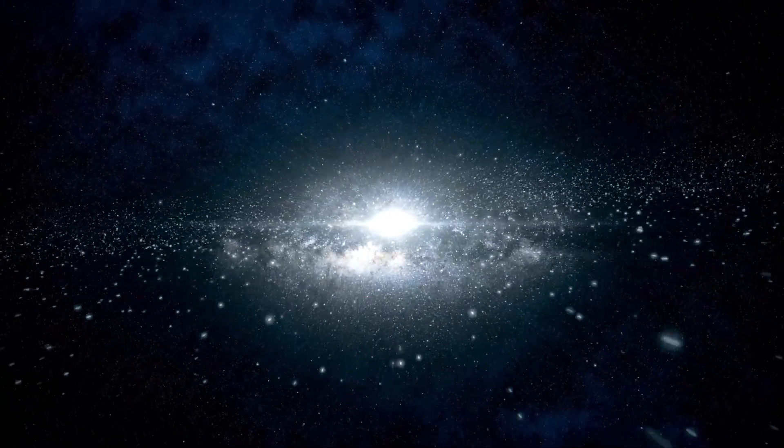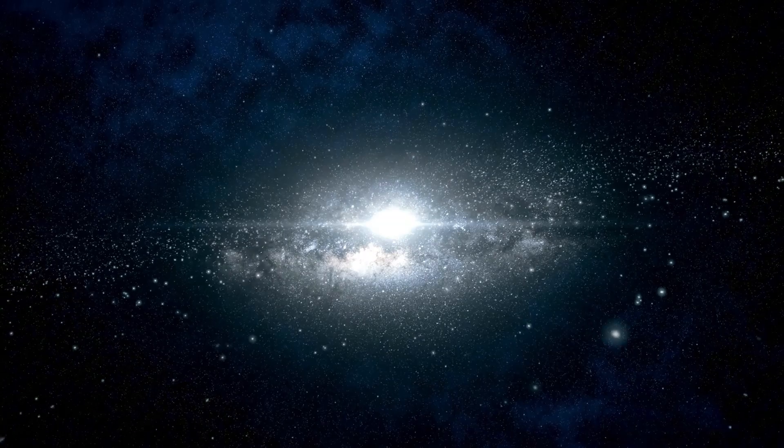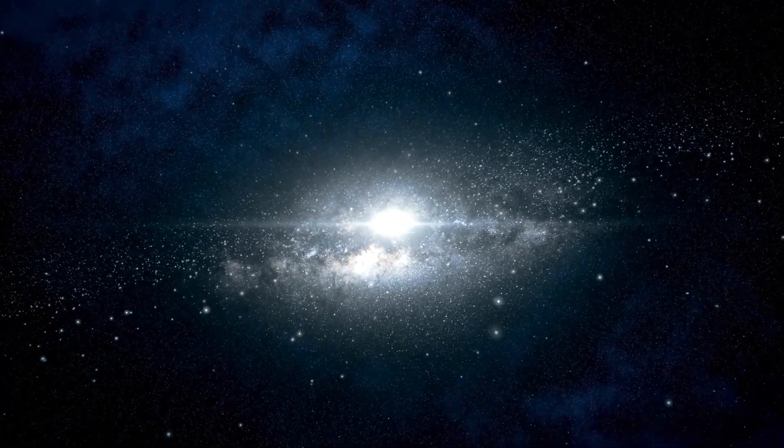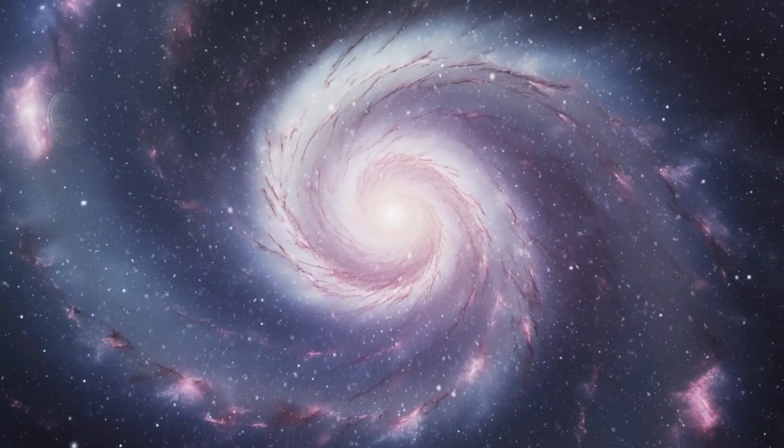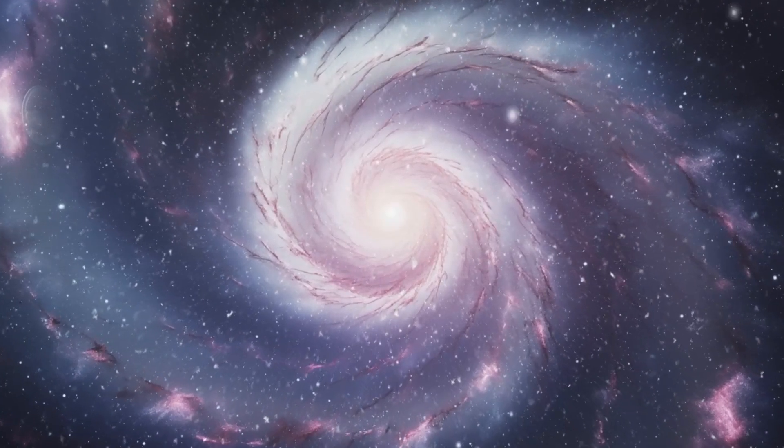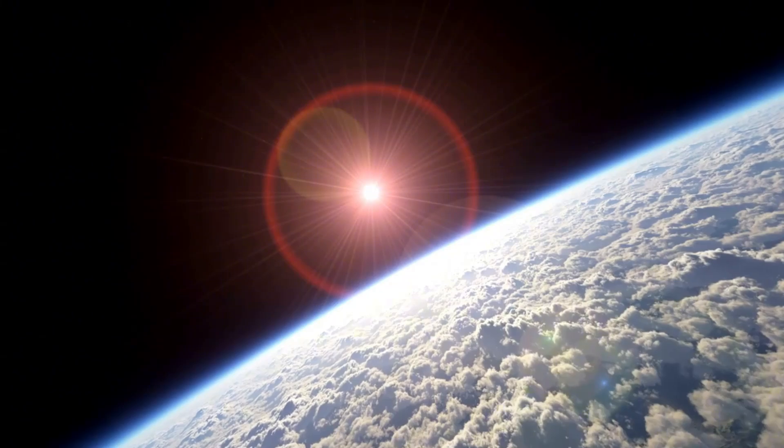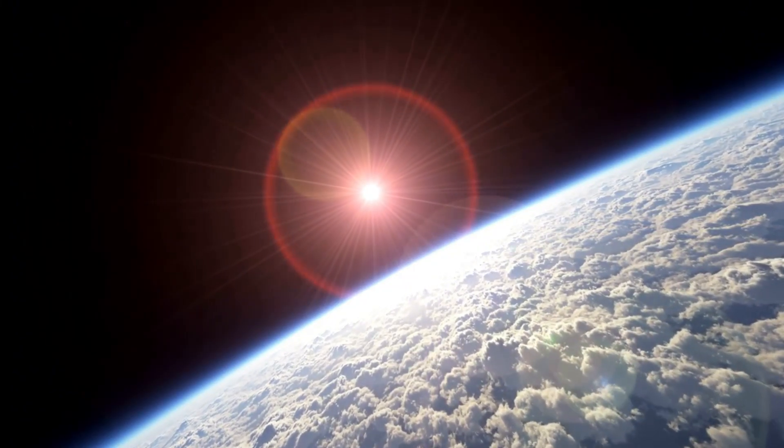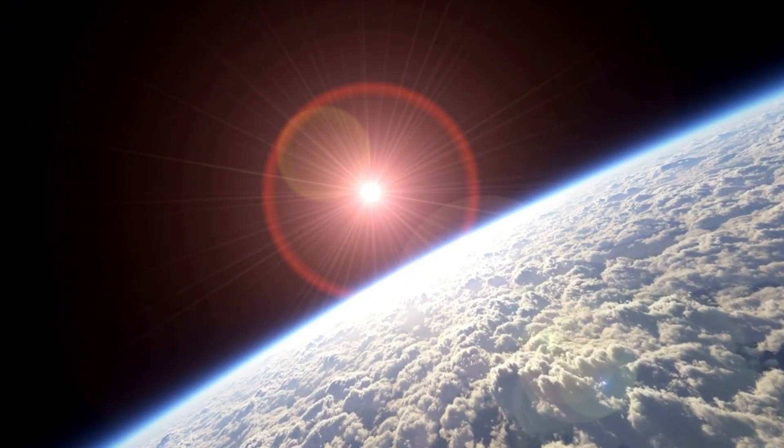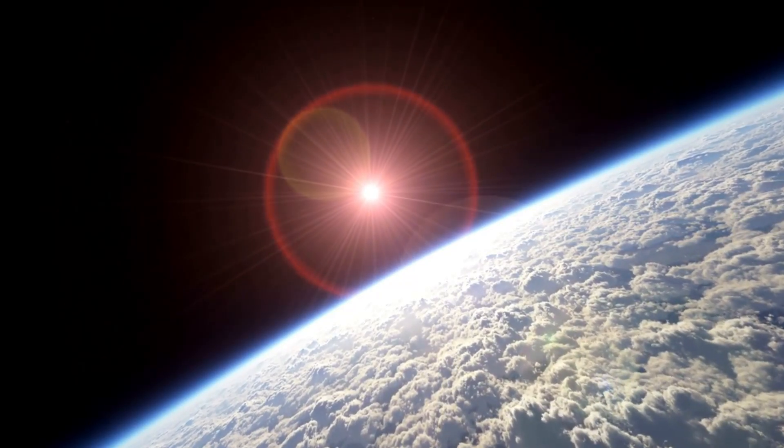Overdense regions went through expansion due to radiation pressure, followed by gravitational collapse, leading to the formation of large-scale structures. Around 380,000 years after the Big Bang, the universe cooled enough for stable neutral atoms to form, marking a critical step where photons decoupled and their wavelengths stretched as the universe expanded.